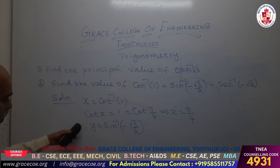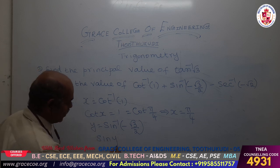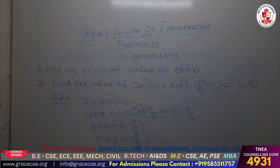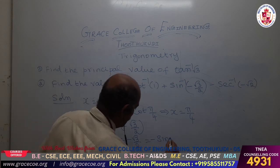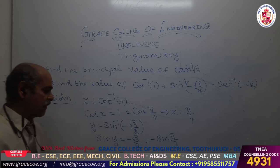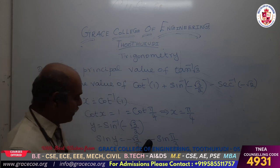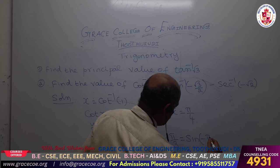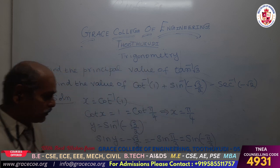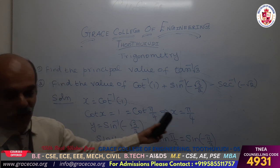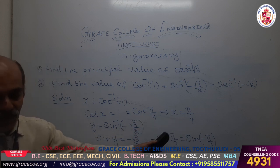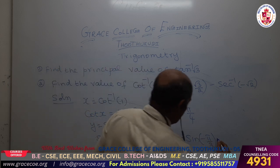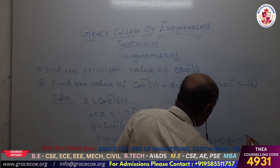Sin inverse of minus root 3 by 2 means sin y is equal to minus root 3 by 2. Now minus root 3 by 2: since sin 60 degrees equals root 3 by 2, and because sin of minus theta equals minus sin theta, we have sin y equal to sin of minus pi by 3. That means y is equal to minus pi by 3.